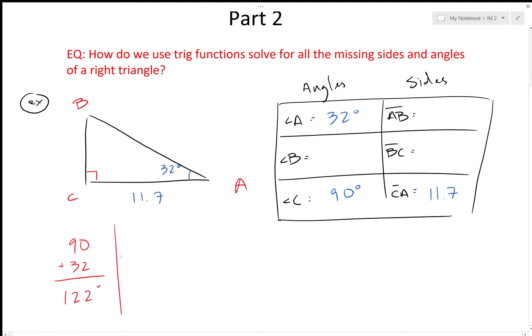And then if I subtract that from 180, because that's what a whole triangle adds up to, I can find out the missing angle. So 180 minus 122 should give me 58 degrees.